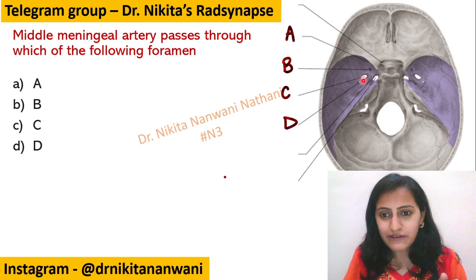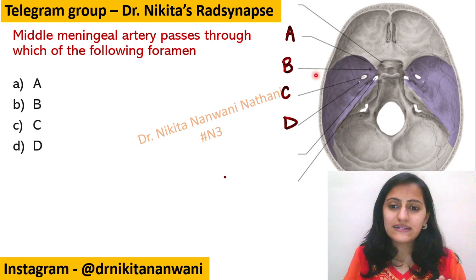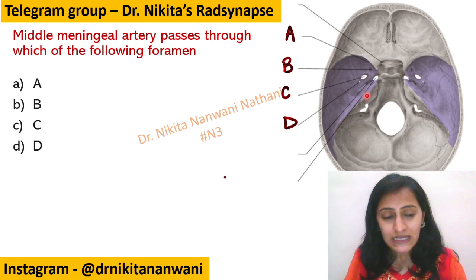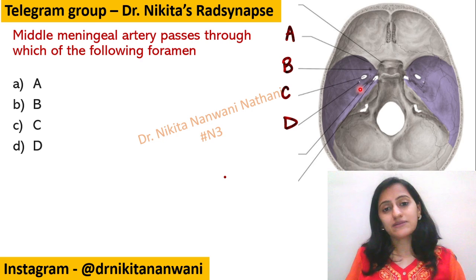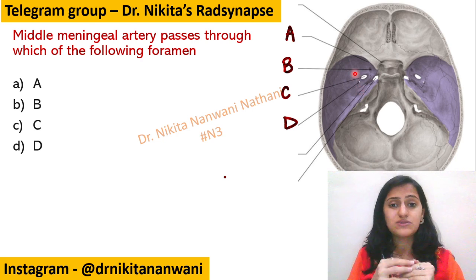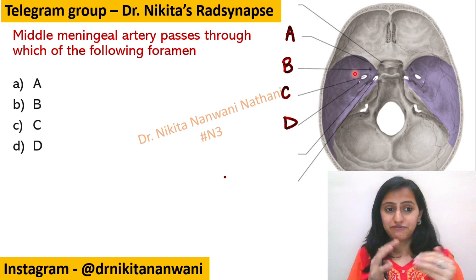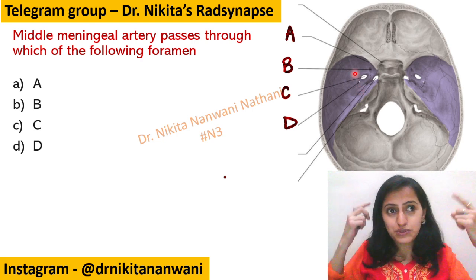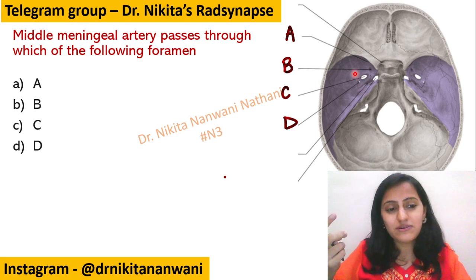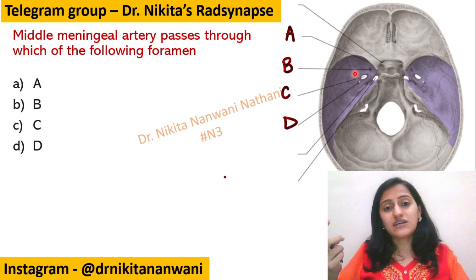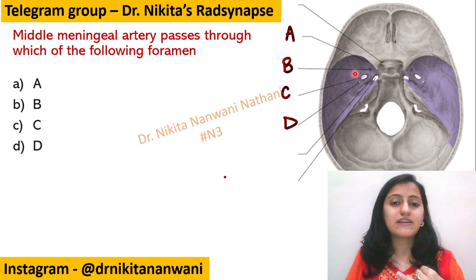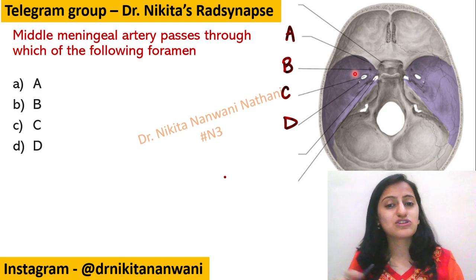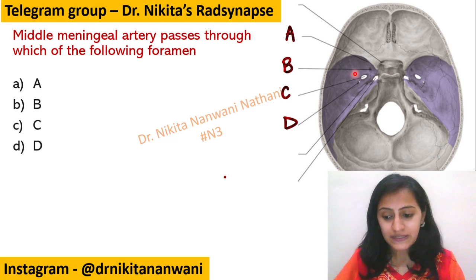We have four important foramina here in the greater wing of the sphenoid. Now we have a mnemonic to remember this — it is like a two-step question. First we need to remember through which foramen the middle meningeal artery passes, and then in the diagram we need to identify which one that foramen is.